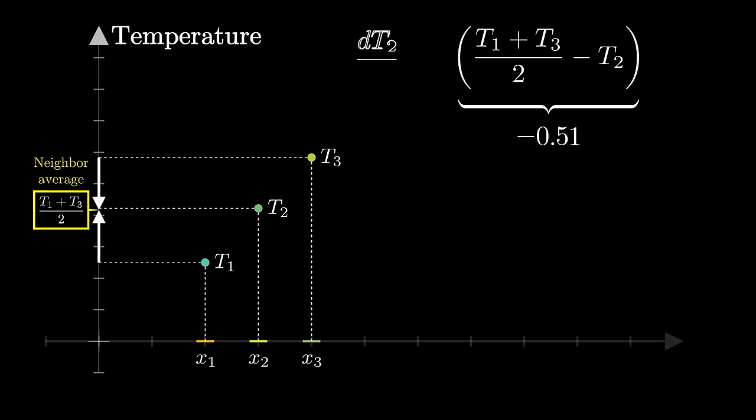More formally, we write that the derivative of t2, with respect to time, is proportional to the difference between this average value of its neighbors and its own value. Alpha here is a proportionality constant.